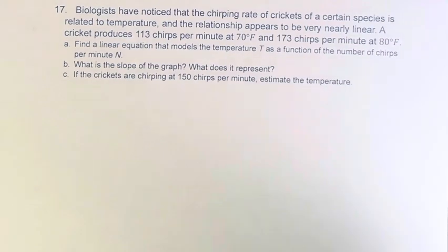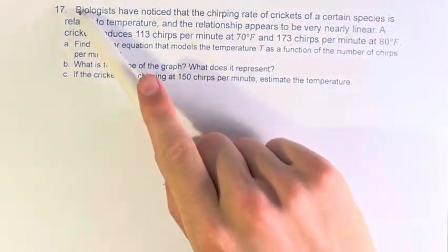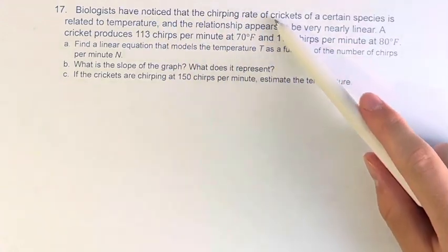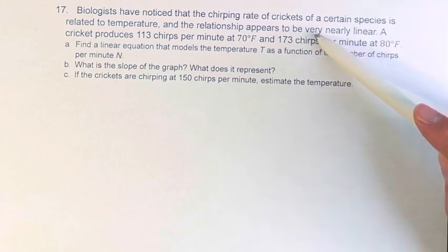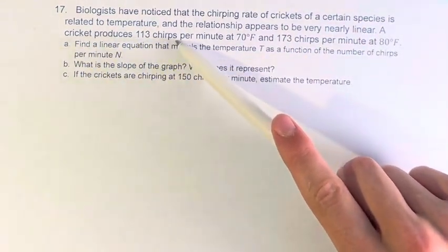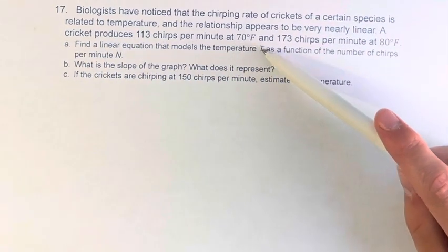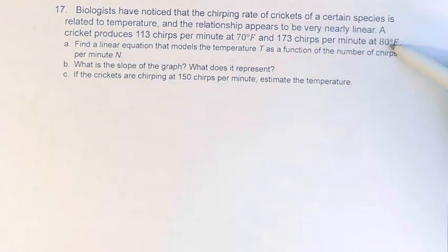Hello and welcome back to another video. In this problem we're told that biologists have noticed that the chirping rate of crickets of a certain species is related to temperature and the relationship appears to be very nearly linear. A cricket produces 113 chirps per minute at 70 degrees Fahrenheit and 173 chirps per minute at 80 degrees Fahrenheit.